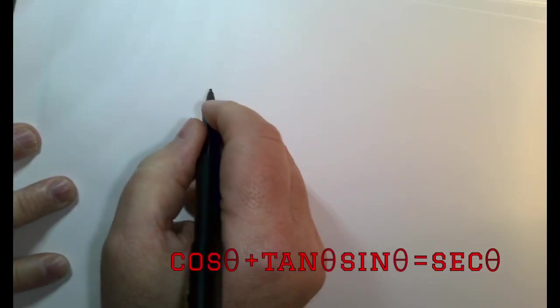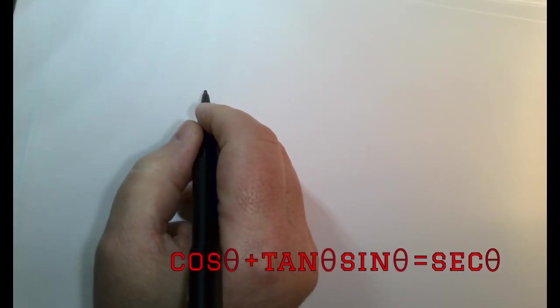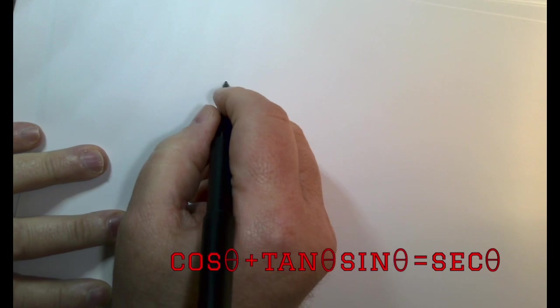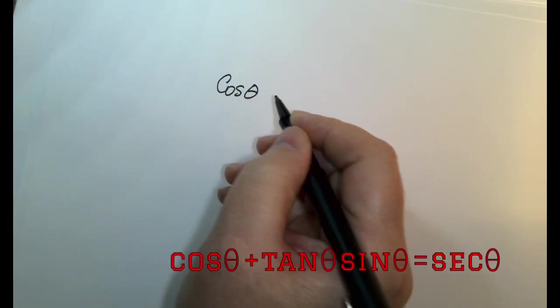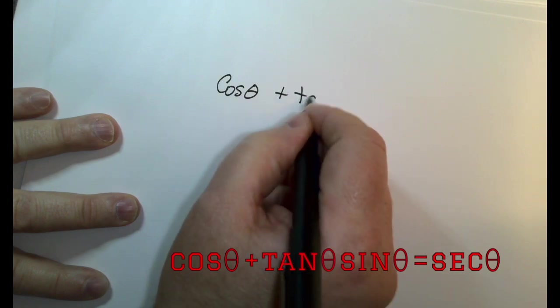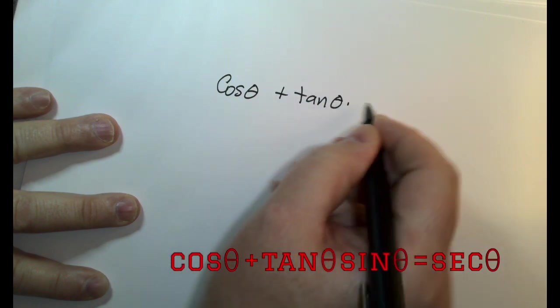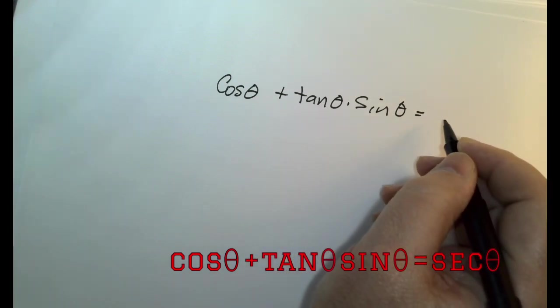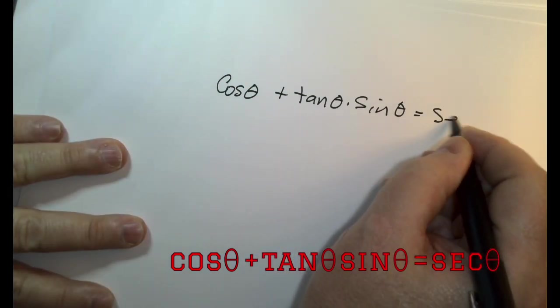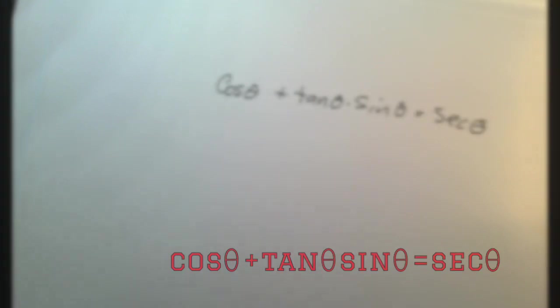Okay, so let's try one, which is cosine theta plus tangent theta times sine theta is equal to secant theta. When we do this one, we're not trying to show that there's a value that makes it true.